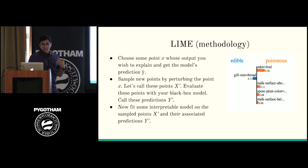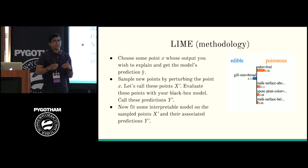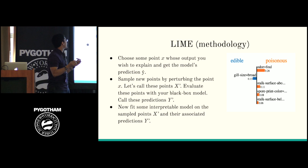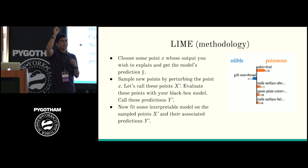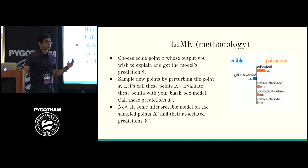How does LIME work? You basically have the point you want to explain and get the model's prediction for it. But you can't really fit a surrogate model to just one point — n equals one is not a sufficient statistic. So you need to create new points around that one point by perturbing it: adding some noise, increasing one column by 0.01, decreasing another by 0.01, and seeing what the model predicts for these new points. Then you fit a weighted linear regression based on distance from the original point.